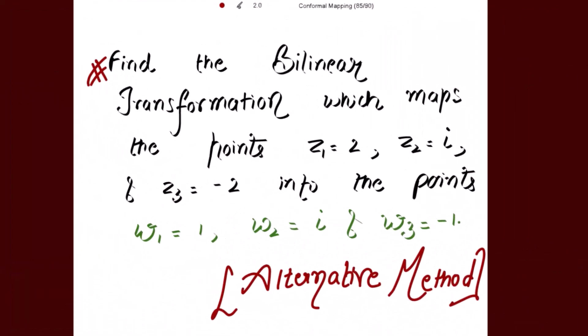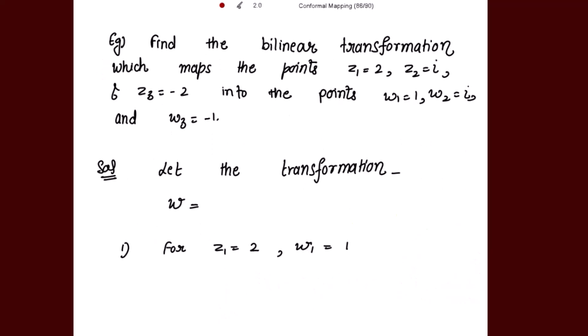Find the bilinear transformation which maps the points z1=2, z2=i, and z3=-2 into the points w1=1, w2=i, and w3=-1. We have to find the bilinear transformation. This same example was done in previous content, and now I am going to solve it using another method which will be much easier. So let's start with the solution.